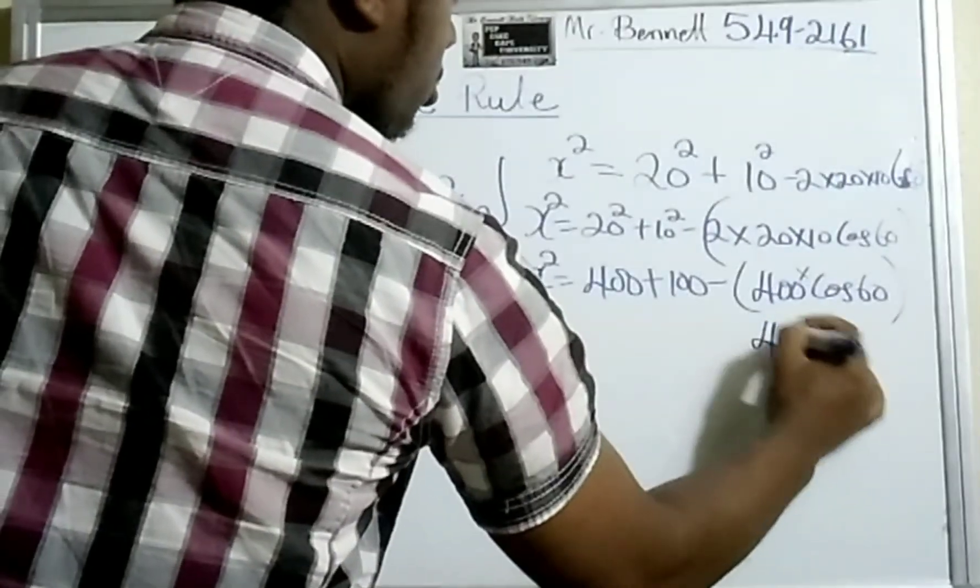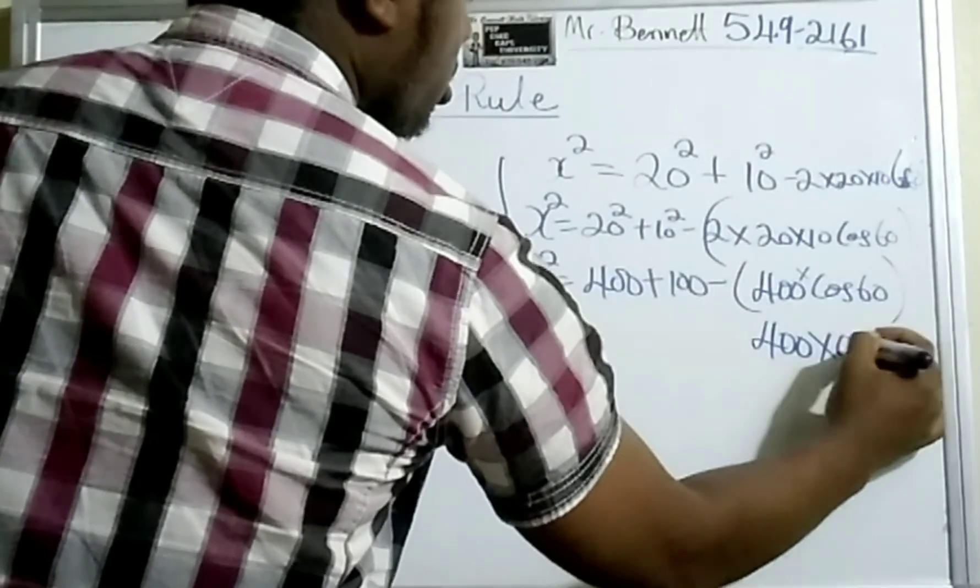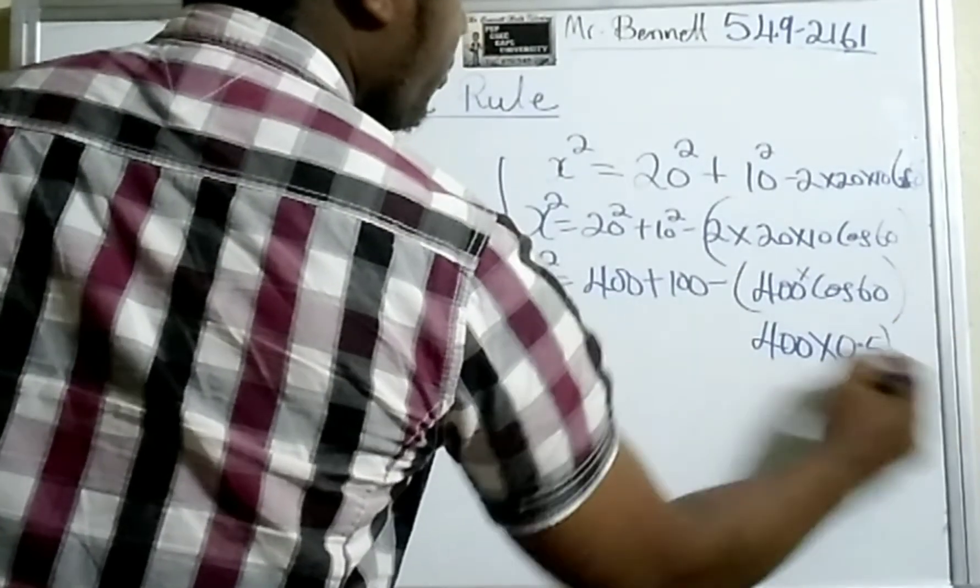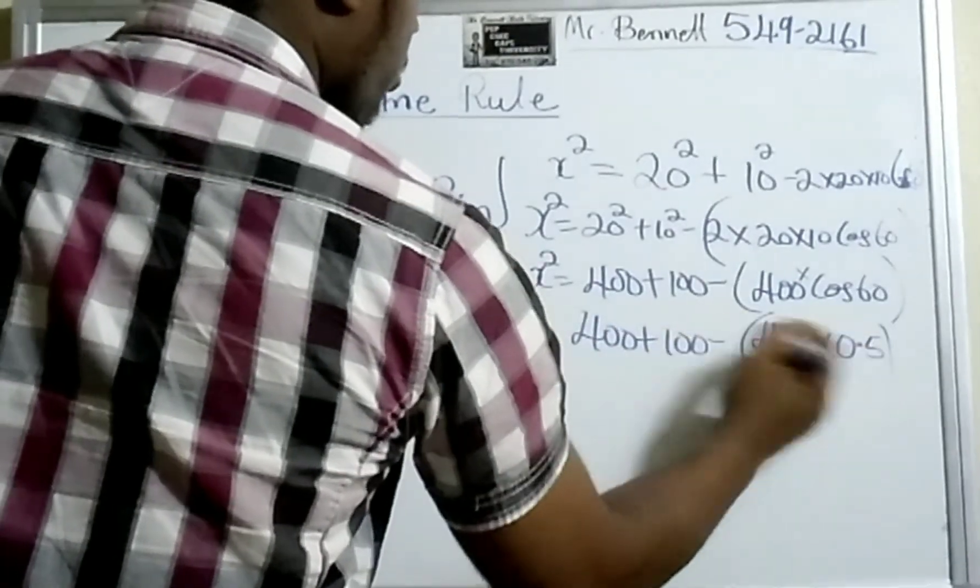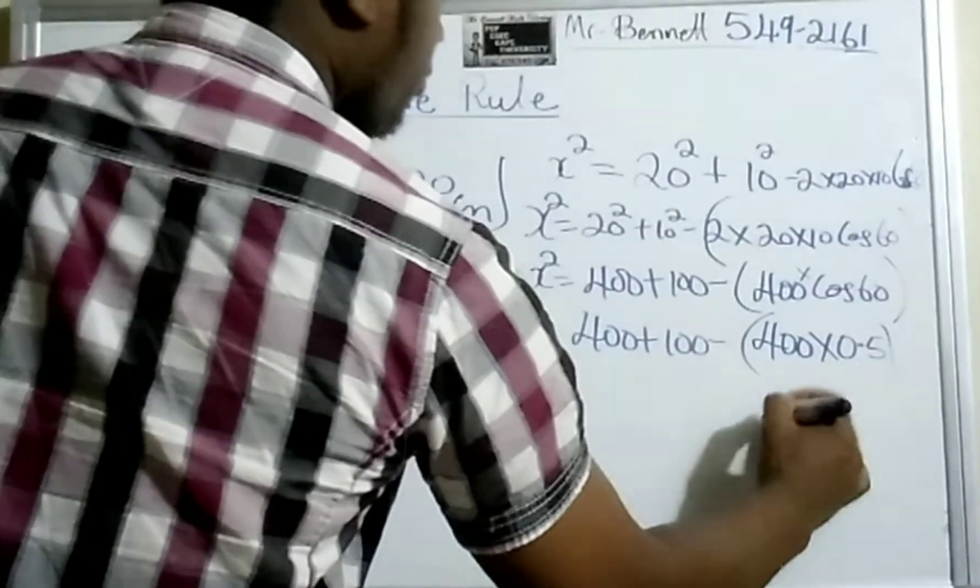400 times cos 60 is equal to 200, because cos 60 is 0.5.